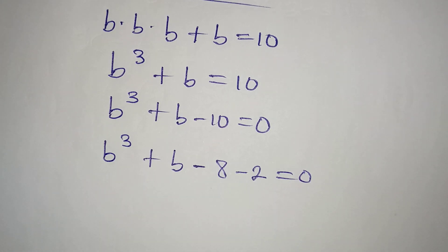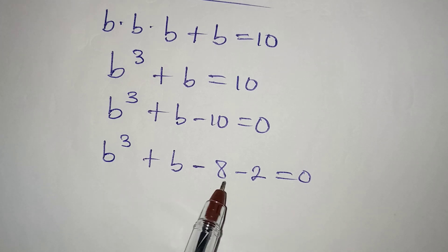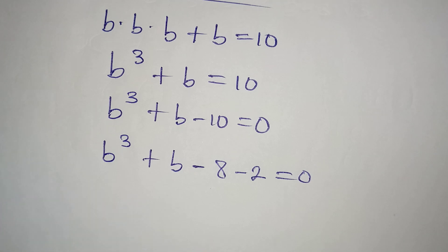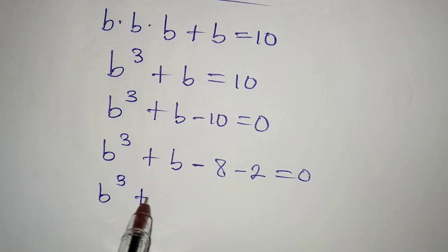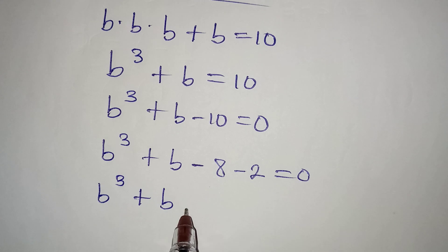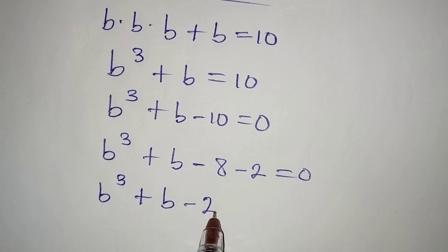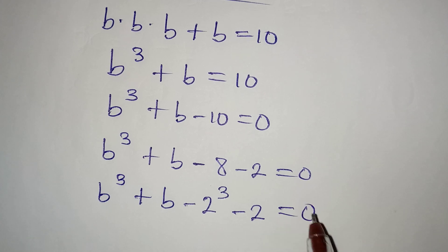I am picking this because 8 can be written in index form so that it would have 3 as the power. This is the same as b to the power of 3 plus b minus 2 to the power of 3 minus 2 equal to 0.